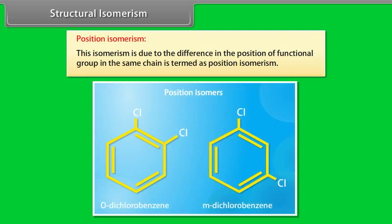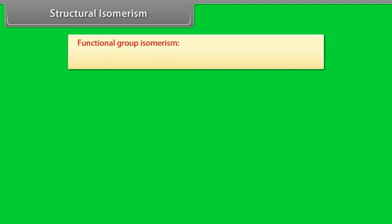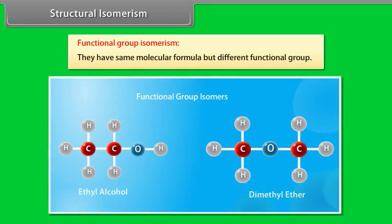Position isomerism is due to the difference in the position of functional group in the same carbon chain. Functional group isomerism: these compounds have same molecular formula but different functional groups.